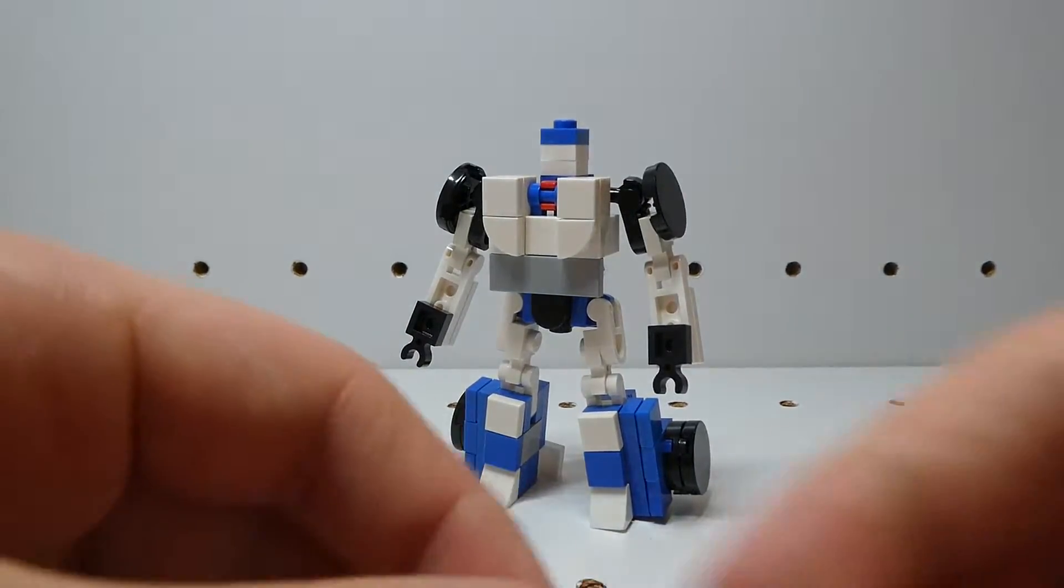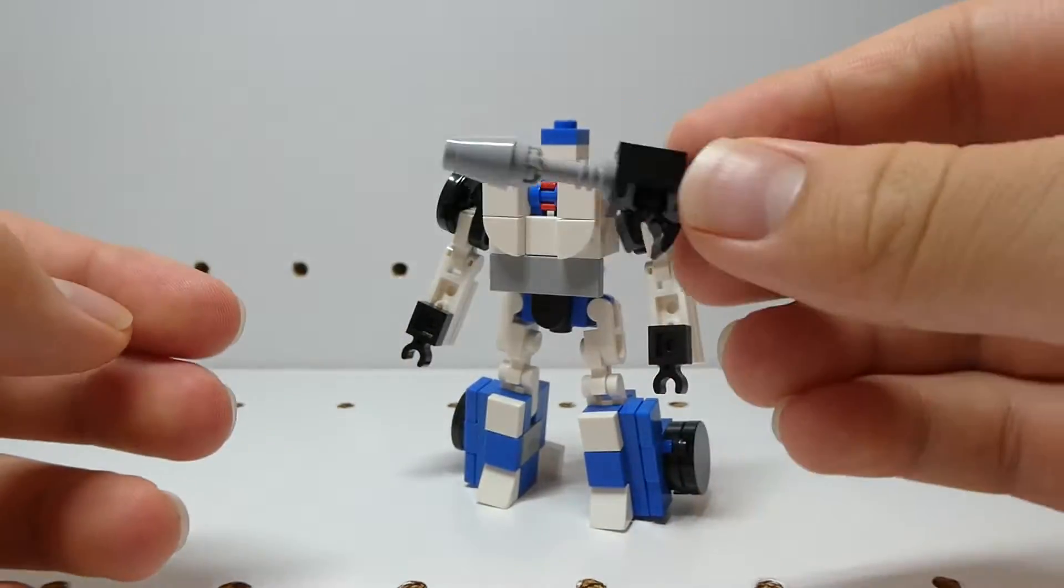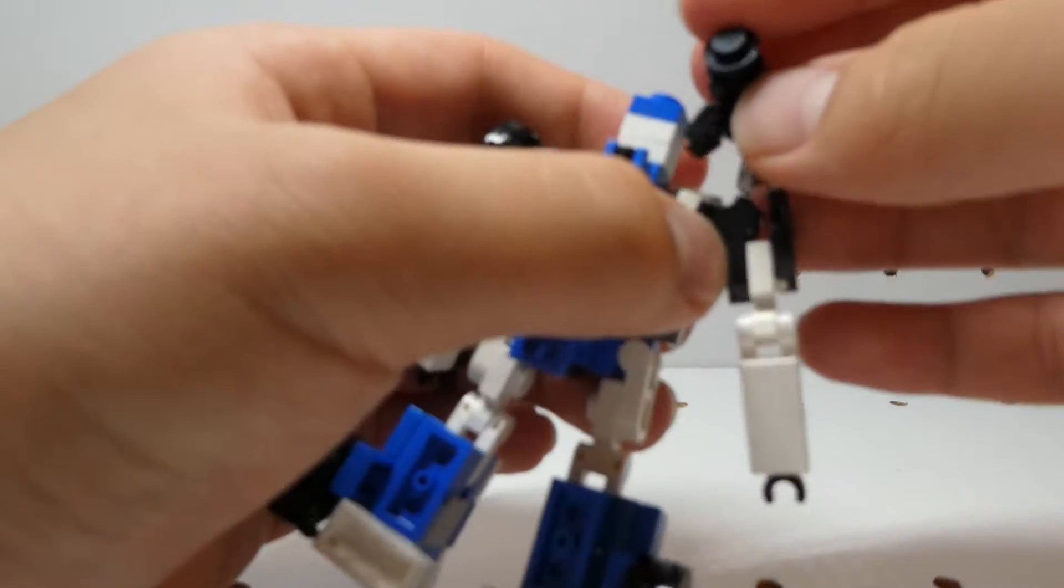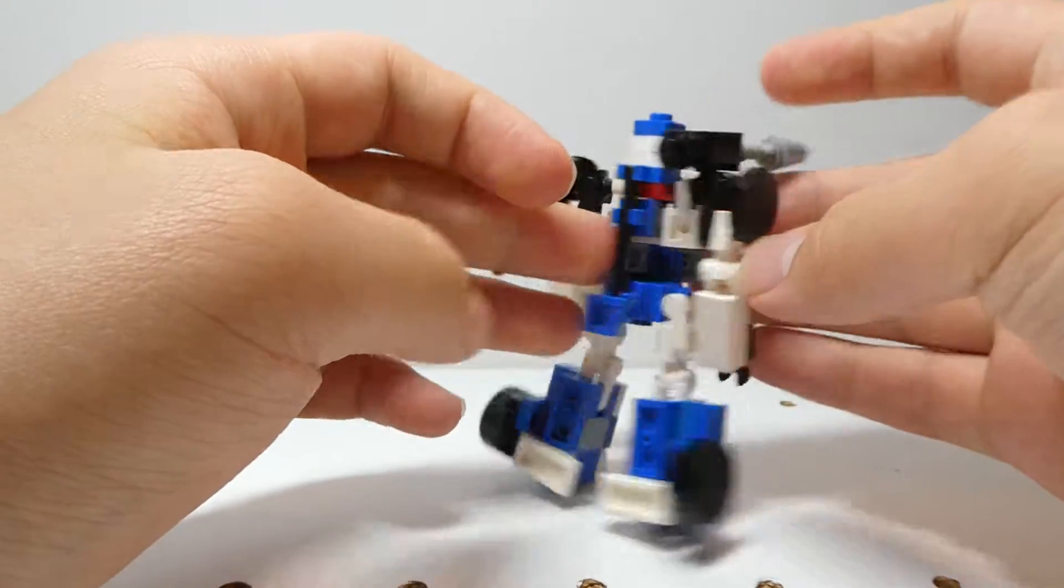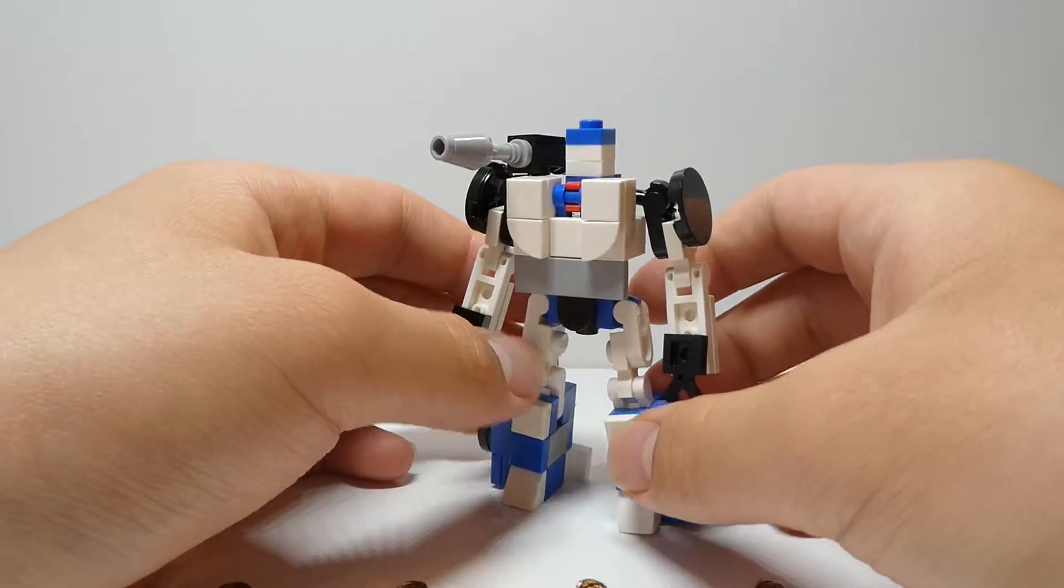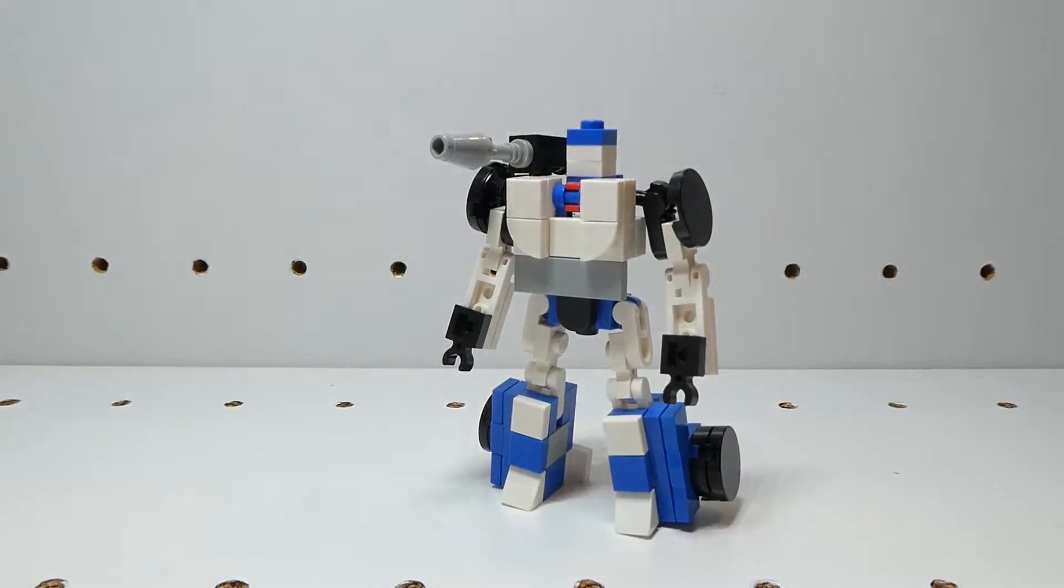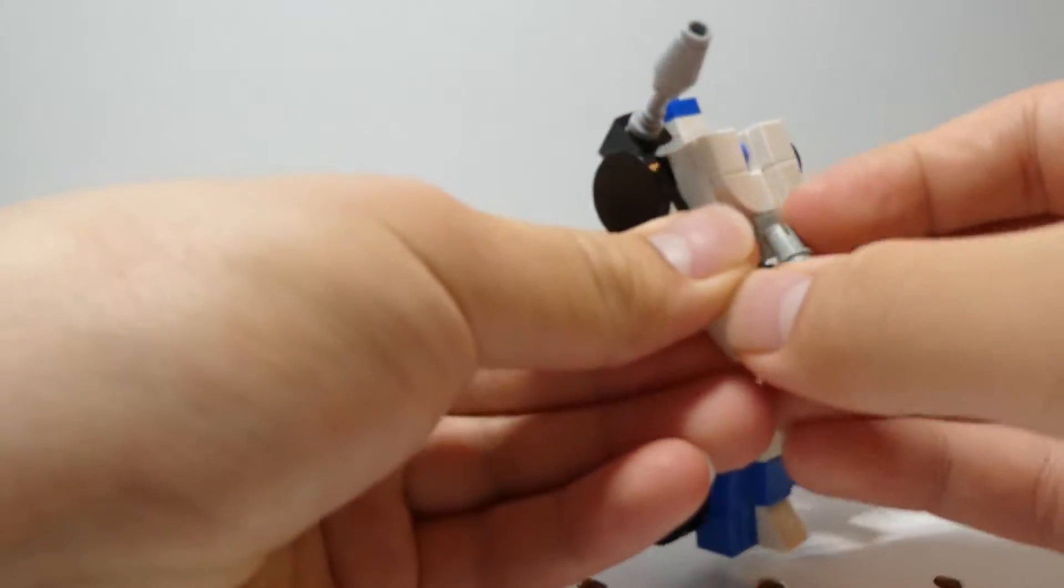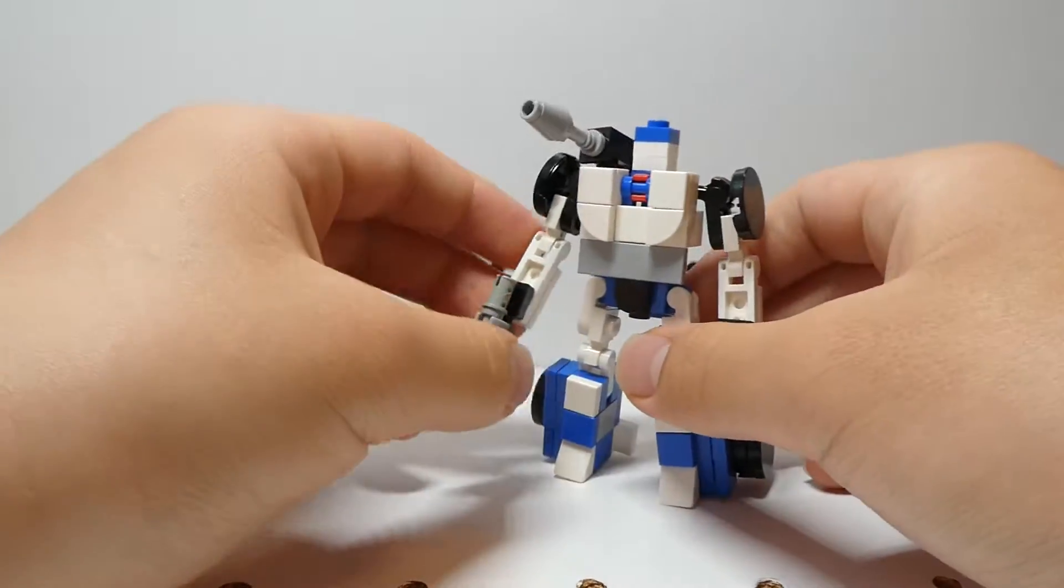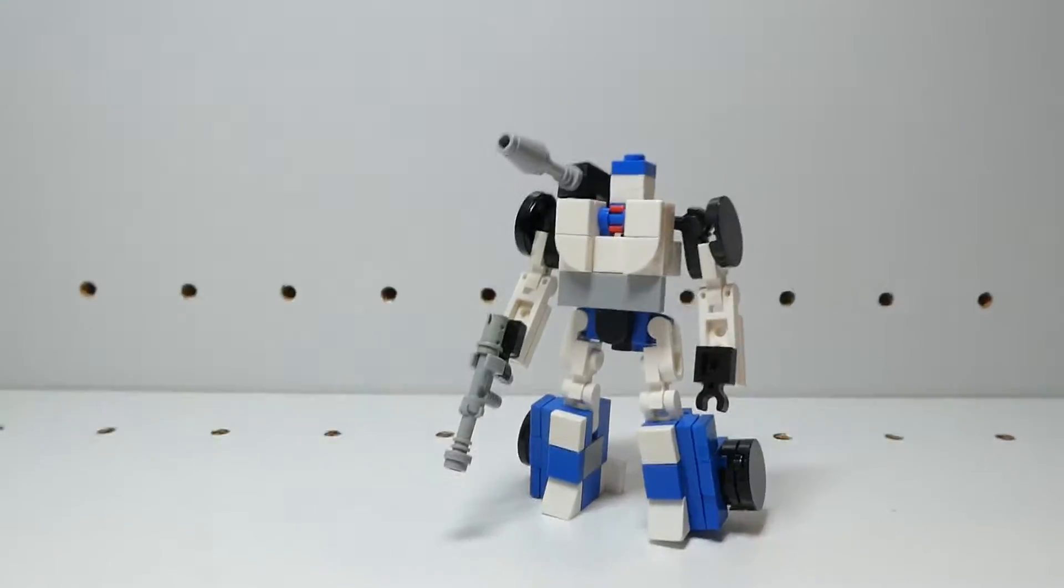So for accessories that work in this mode, he's got a shoulder cannon that you can attach up here to your shoulder, just by clipping it on like this. He's also got a gun that you can hold. So it'll just clip into his hand. And I guess there's all of Mirage's accessories done.